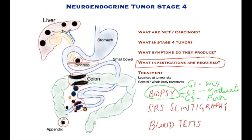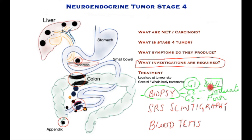There is another video in the playlist with much more detail on tests. Briefly, these patients would benefit from a biopsy, usually taken from the liver, which determines how aggressive the tumor is by dividing it into three grades: G1, G2, and G3. G1 has the best prognosis. Tumors are also examined on how closely they resemble the cell lines they originated from: well differentiated, moderately differentiated, or poorly differentiated. Generally G1 correlates with well differentiated, G2 with moderate, and G3 with poor, though there may be some interplay between these characteristics.